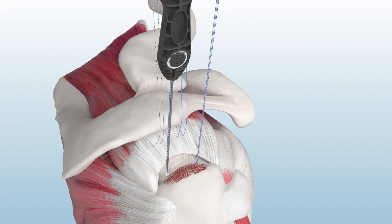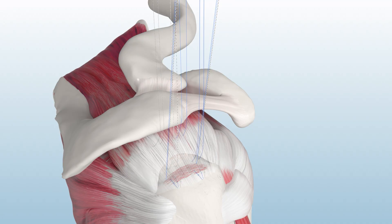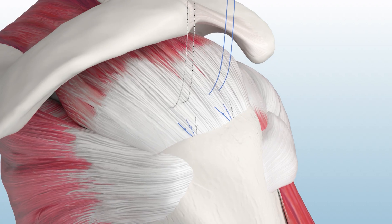Then, insert two Y-Knot Pro RC all suture anchors and complete the primary repair, as you typically would.